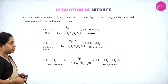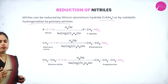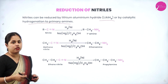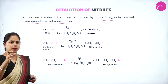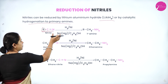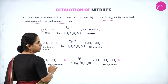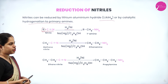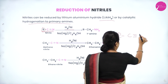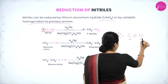Next is reduction of nitriles. Nitriles can be reduced to primary amines by lithium aluminium hydride (LiAlH₄) — a very strong reducing agent — or by catalytic hydrogenation (addition of hydrogen in presence of a catalyst such as nickel). The nitrile functional group is R–C≡N. In catalytic hydrogenation, hydrogen is added across the triple bond: first two hydrogen atoms convert the triple bond to a double bond, giving R–CH=NH.